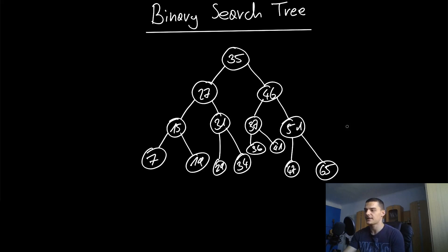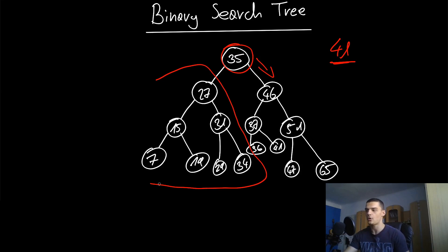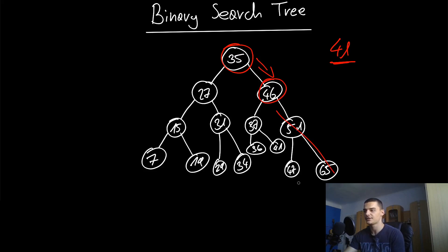With a value like 65, this becomes a fairly balanced binary search tree. If you want to find the element 41, you start at the root 35. Since 41 is greater than 35, it must be to the right — so you can immediately exclude all the nodes on the left side. You've halved the problem size after just one step.